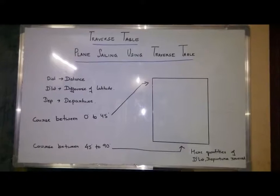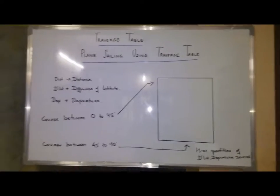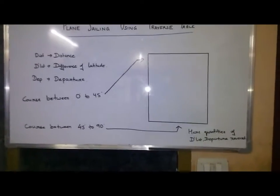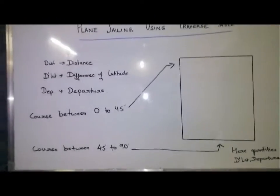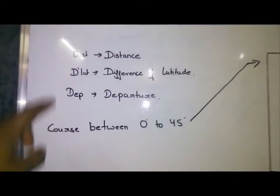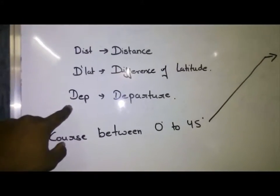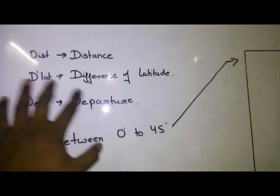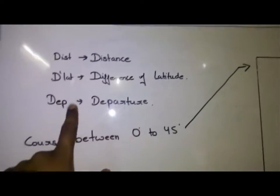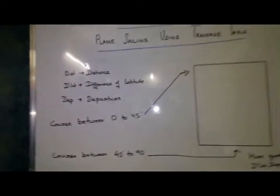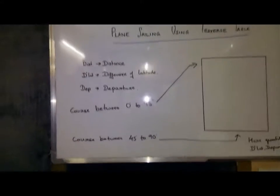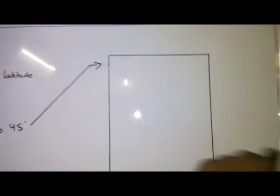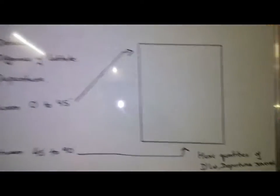Now when you open the Norie's table and go to the traverse table section, you can see there will be headings like this: distance, DLAT, departure. Distance, DLAT is difference of latitude, Dep is departure. I know everyone will be familiar by now. So now this is the most important thing. Consider this as the table in your Norie's table.